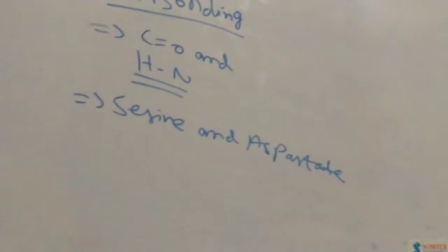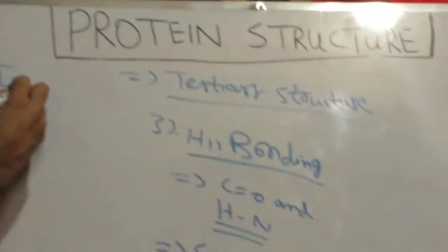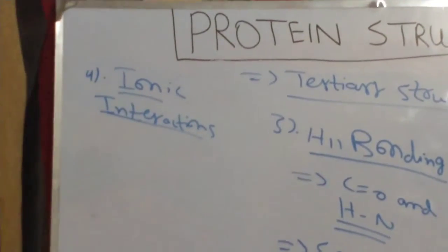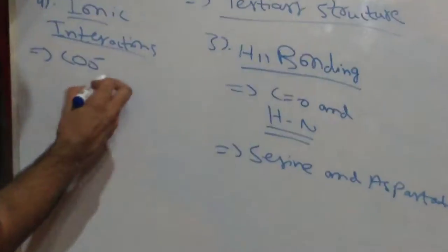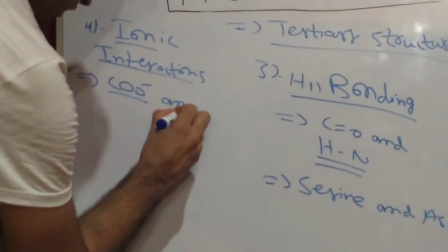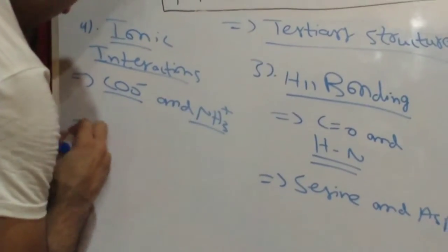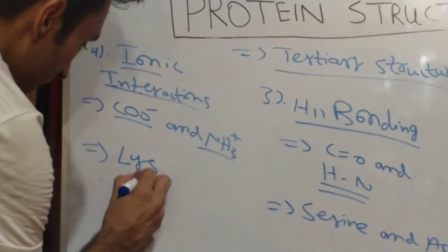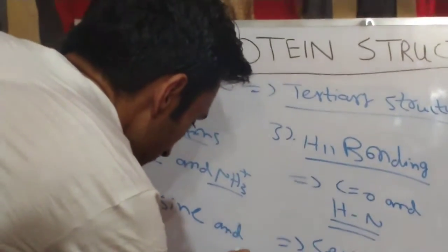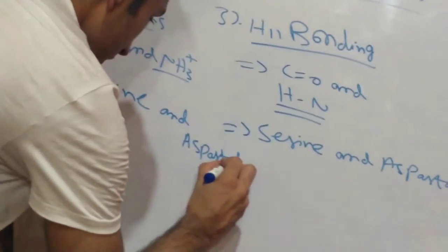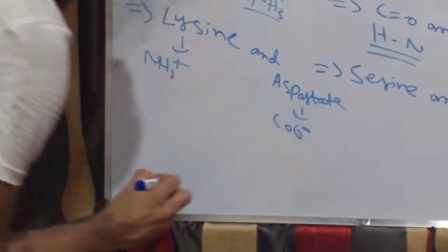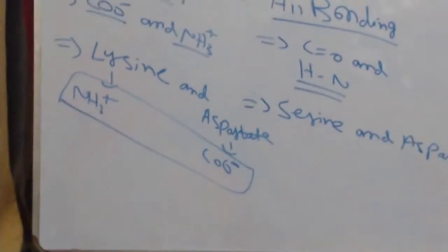The fourth bond involved in the formation of the tertiary structure is ionic interactions. Ionic interactions occur between the negative carboxyl group and the positive amino group. A typical example is the bond between lysine and aspartate — lysine consists of the positive amino group while aspartate consists of the negative carboxyl group, and the bond between these two groups forms the basis of ionic interactions.